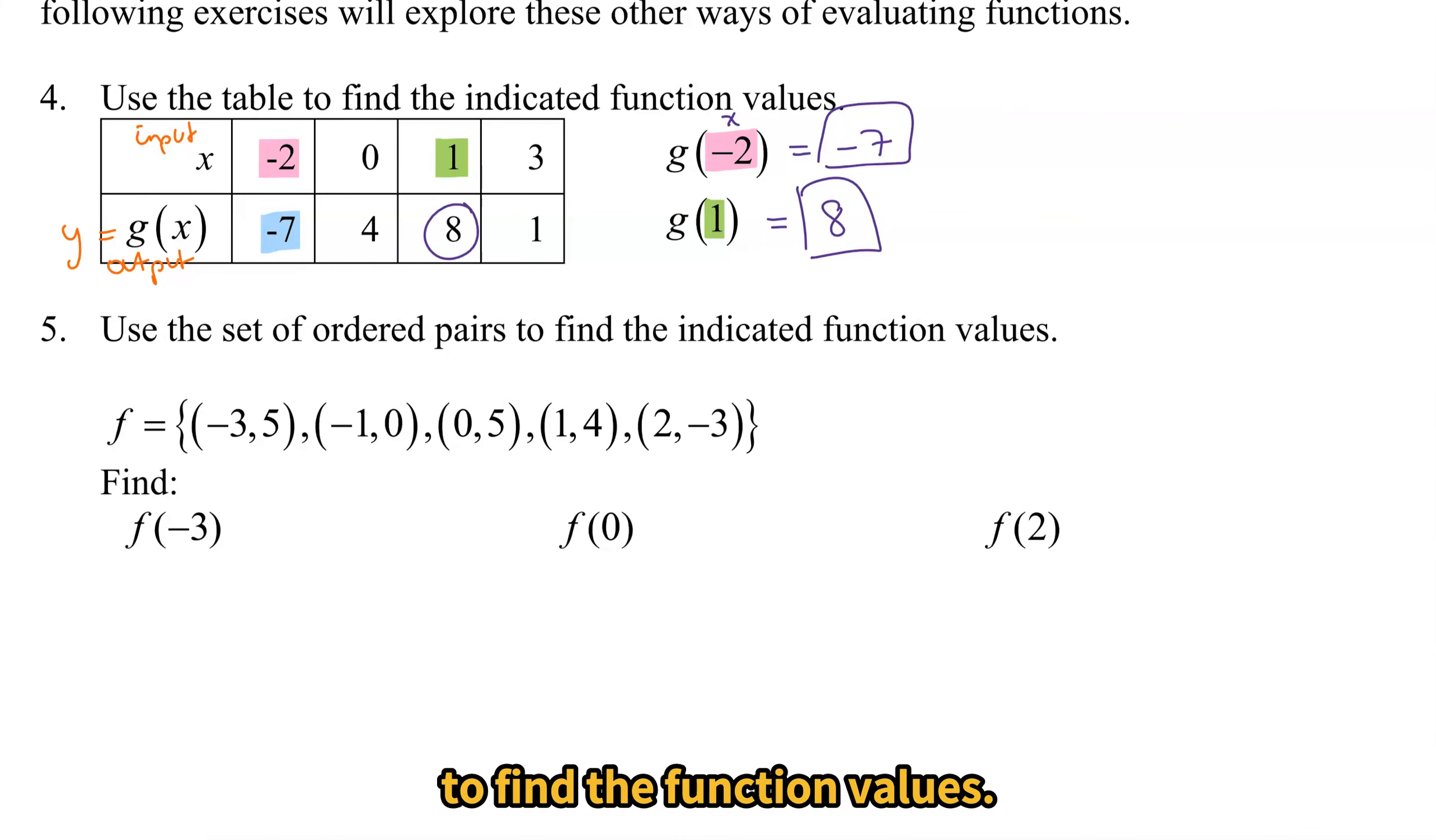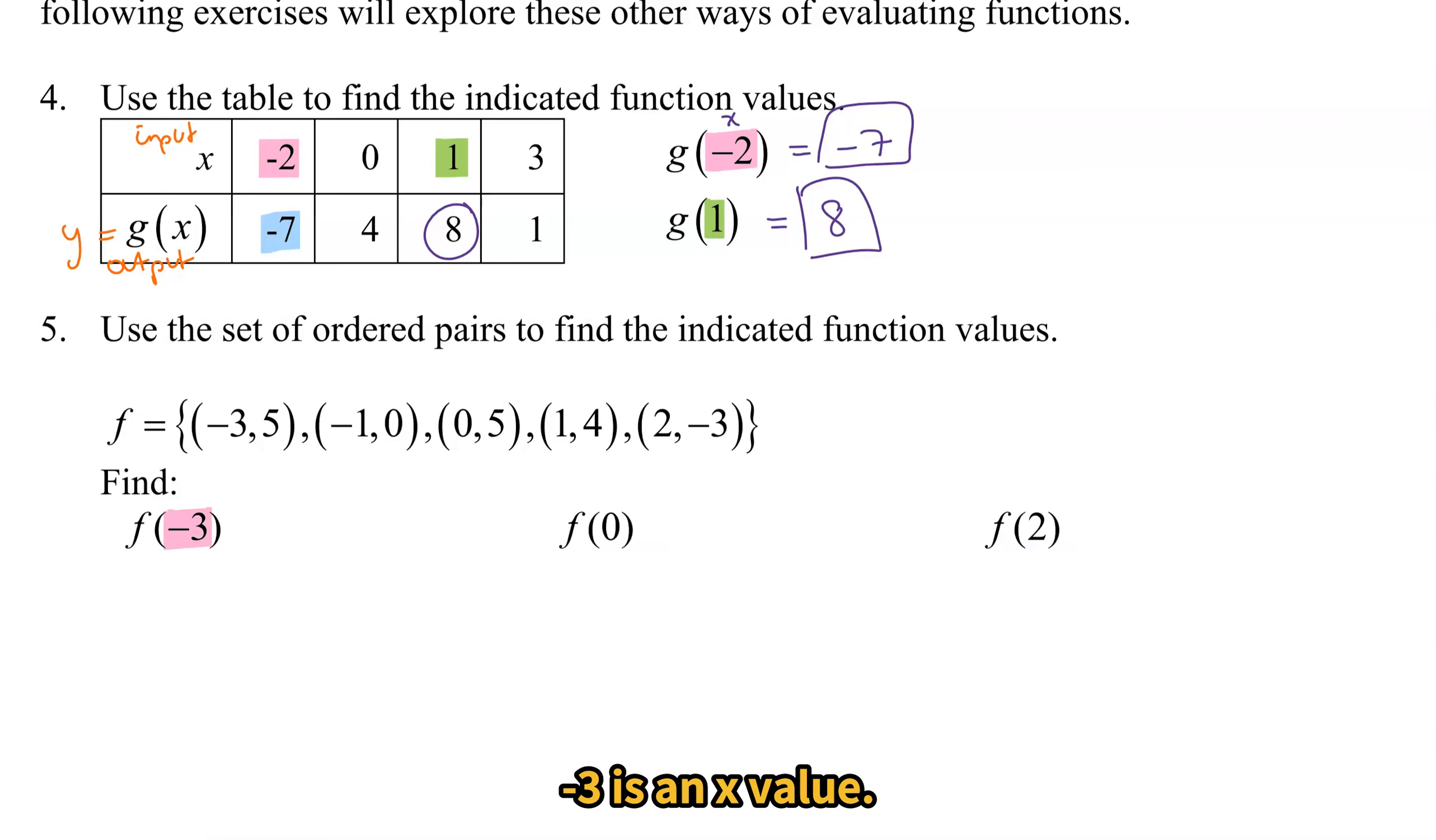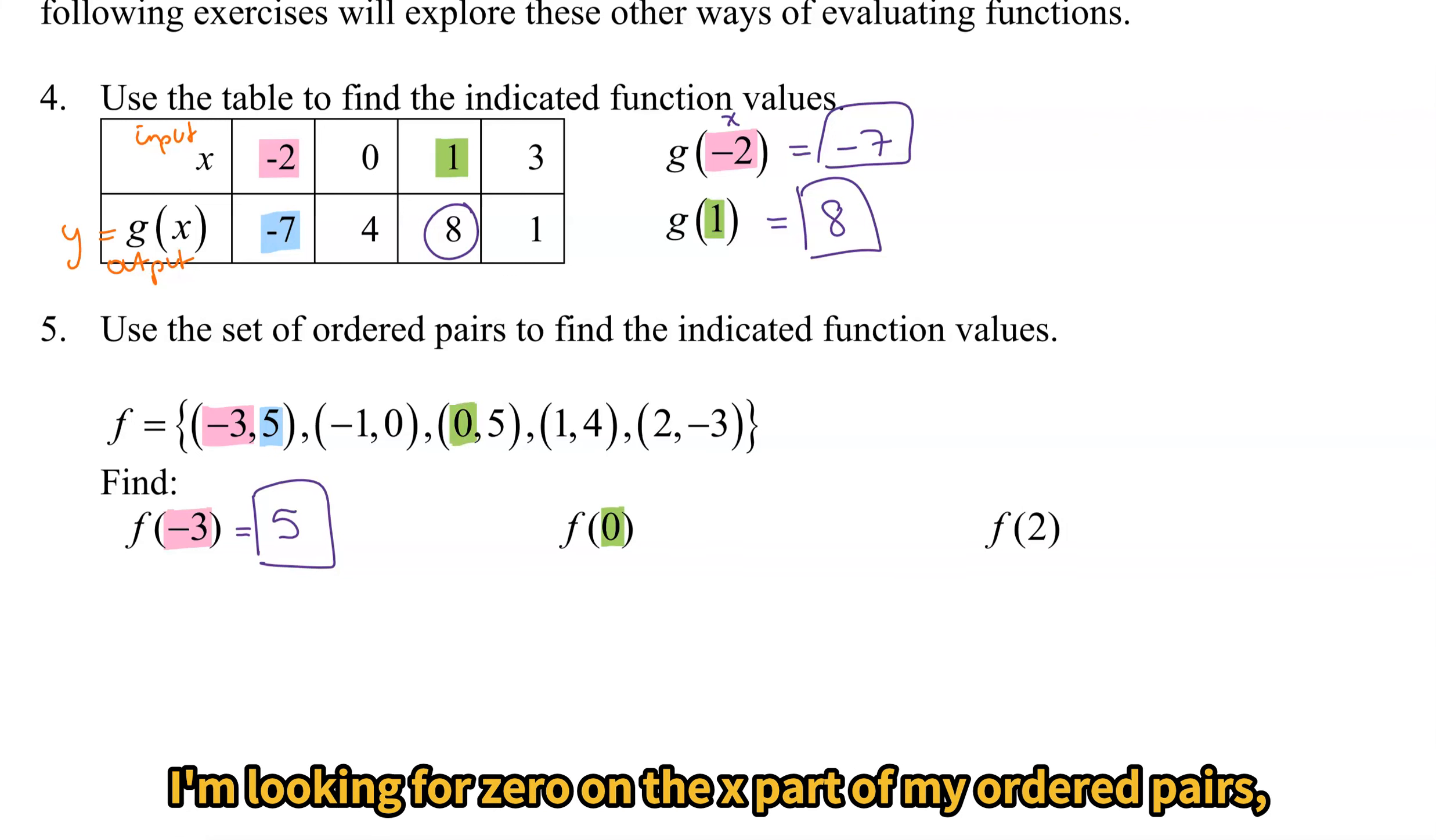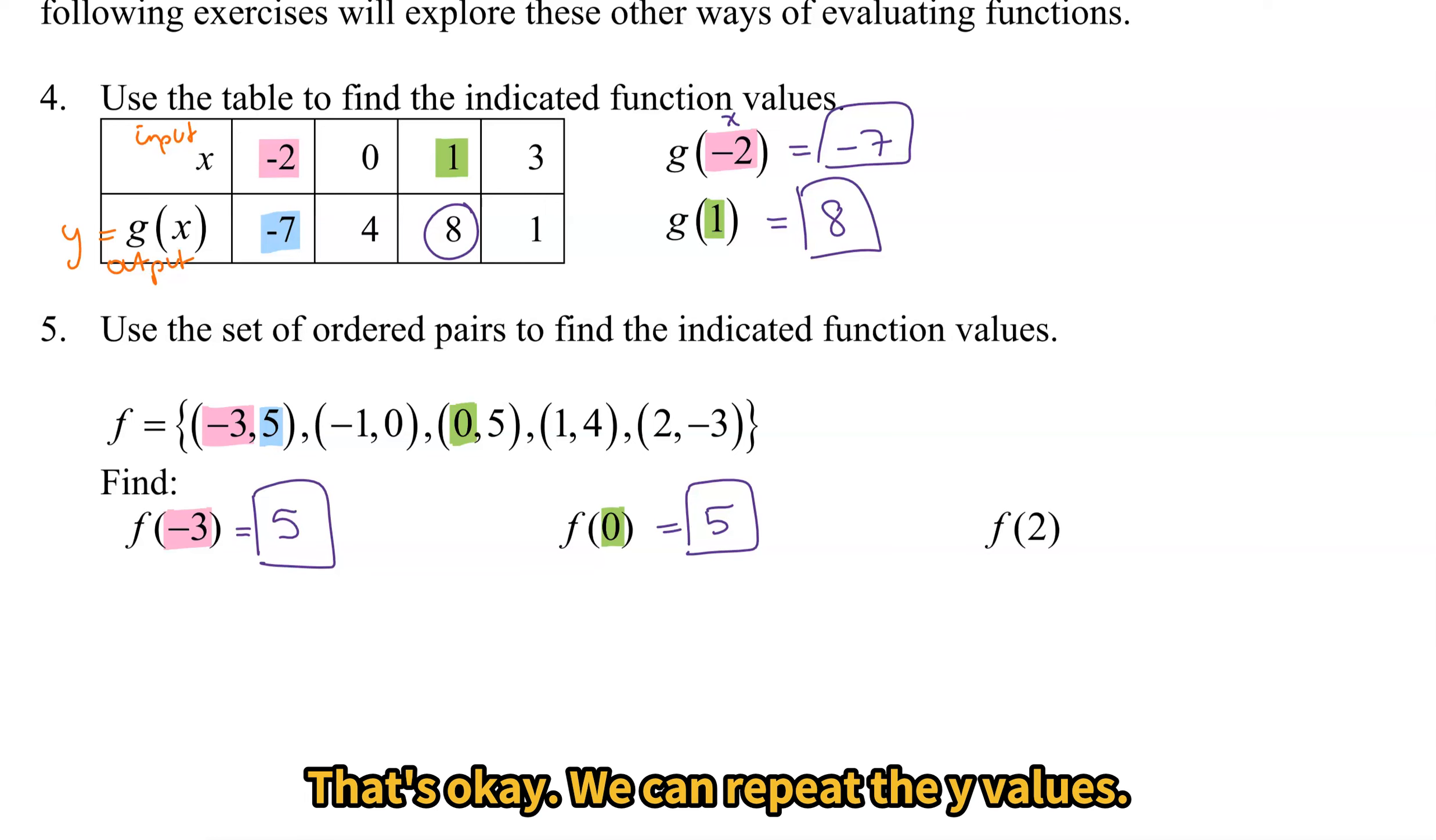Similarly, we can look at sets of ordered pairs to find the function values. Here we have our function f defined as ordered pairs. We're going to play the same type of game. -3 is an x value. So we need to look in the ordered pairs and find an x value that equals -3. Ah, right here in the beginning. The y that corresponds to that x value is 5. Try f(0) and f(2) on your own. Pause the video. When we resume, we'll work through it together. Did you find f(0)? 0, 0 here. I'm looking for 0 on the x part of my ordered pairs, the first part. And I see that 0 corresponds to 5. That's okay. We can repeat the y values. We just cannot repeat the x values and still have a function. f(2). 2 is my x. So I look for an ordered pair that has 2 in the front. And I see that 2 corresponds to -3.